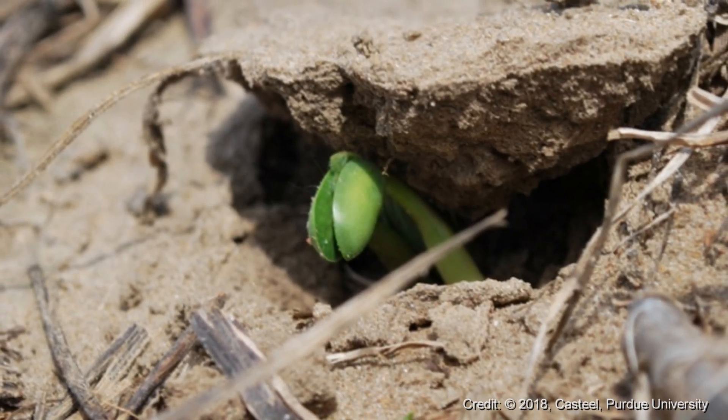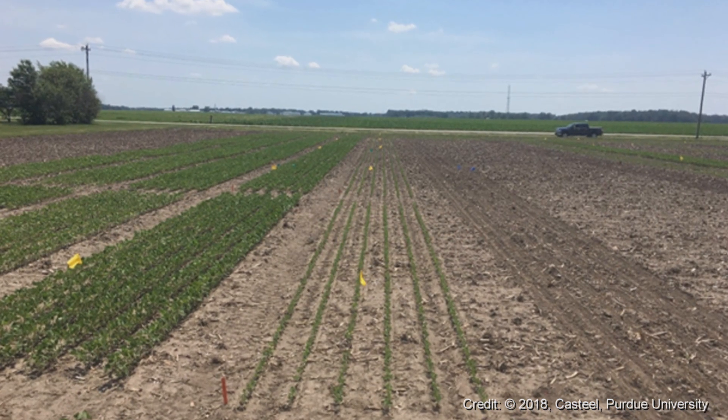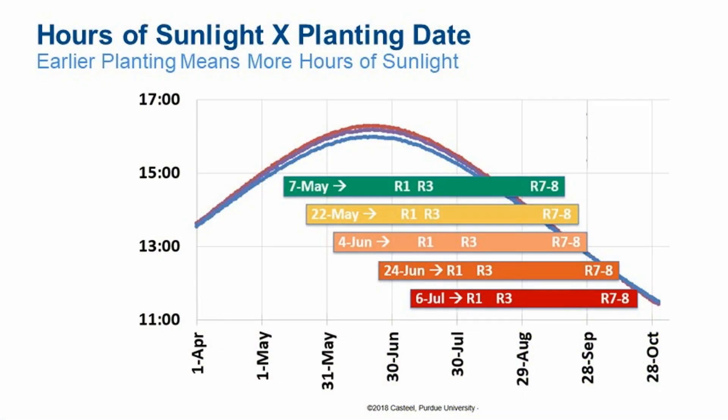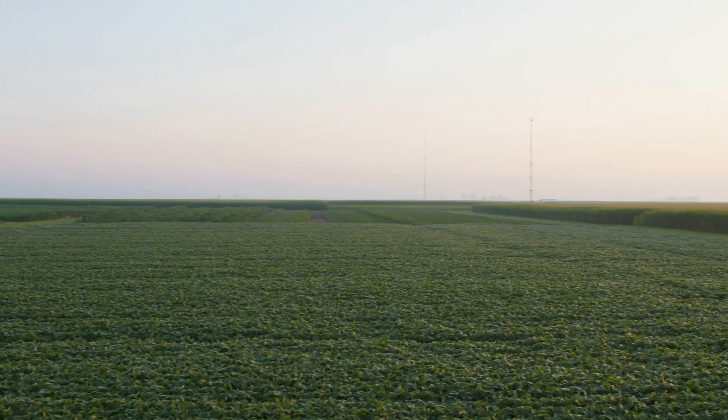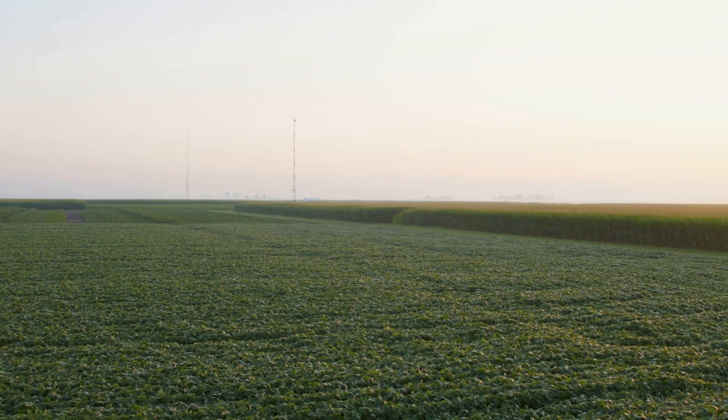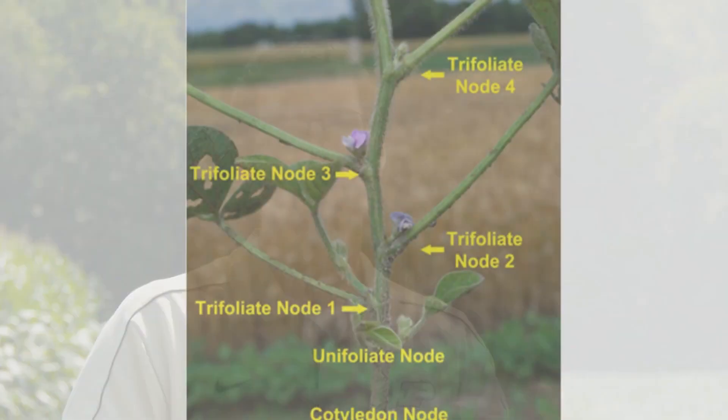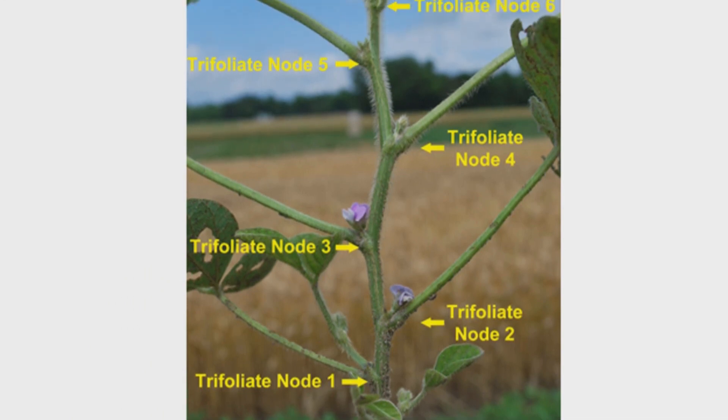One of the big parts of high yield soybean management is being timely with planting. It doesn't necessarily have to be the earliest window, but it certainly shouldn't be whenever the other crop gets planted. When field conditions are fit and soils are warming up, planters need to roll. Soybeans respond to both heat units and photoperiod. By planting timely, you accumulate more thermal energy before photoperiod pushes the plant into flowering, which means more nodes — and more trifoliate nodes means more pods, more seeds, and a cascading effect on final yield.